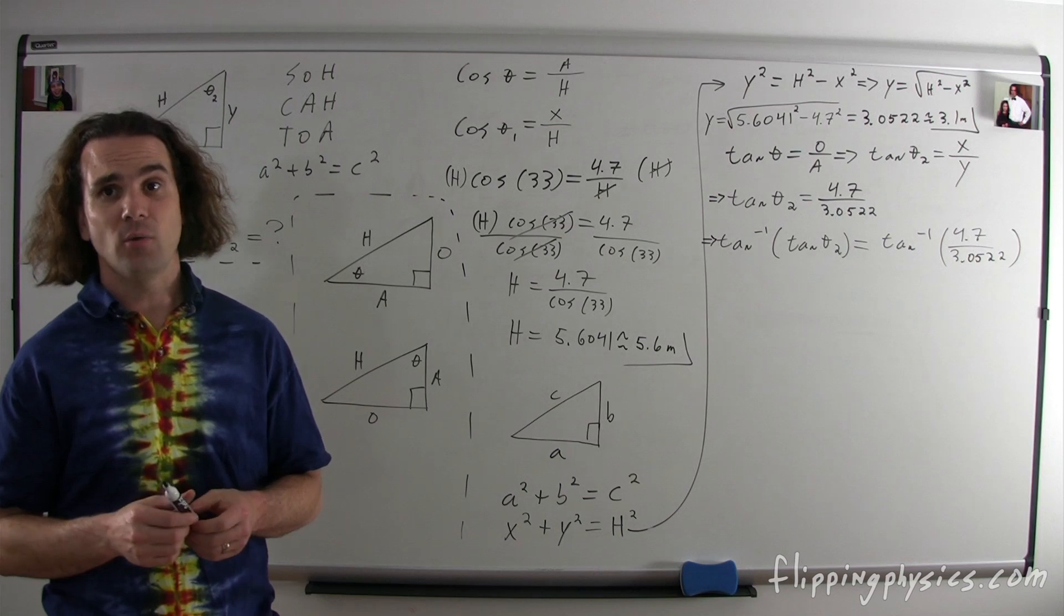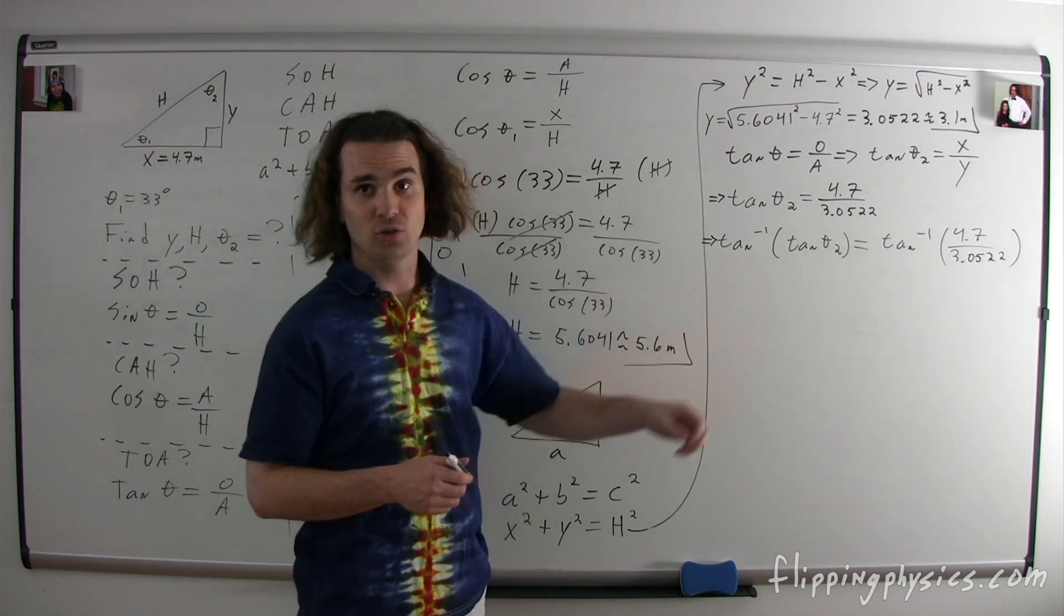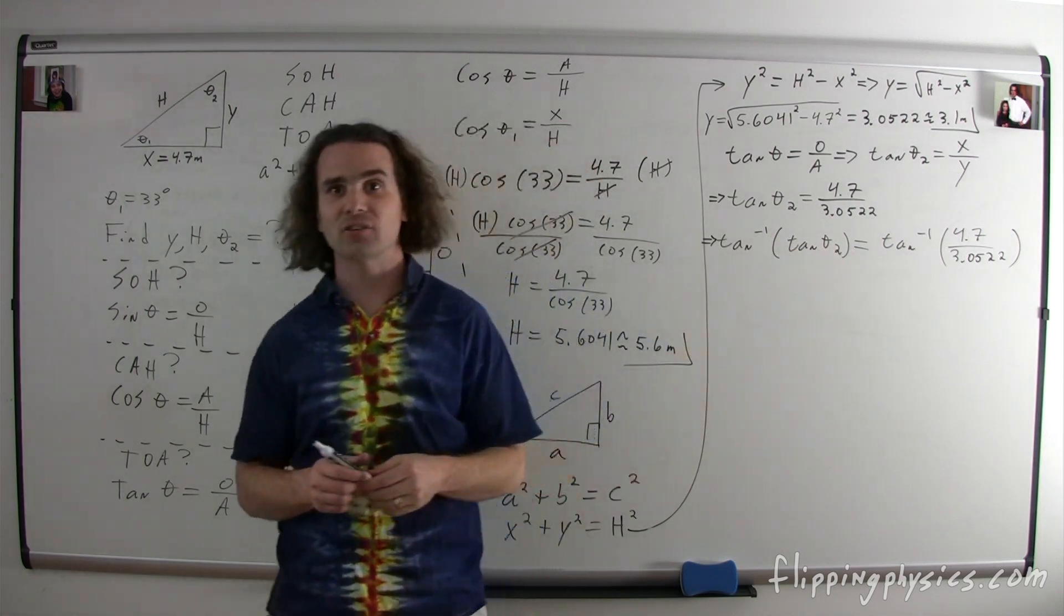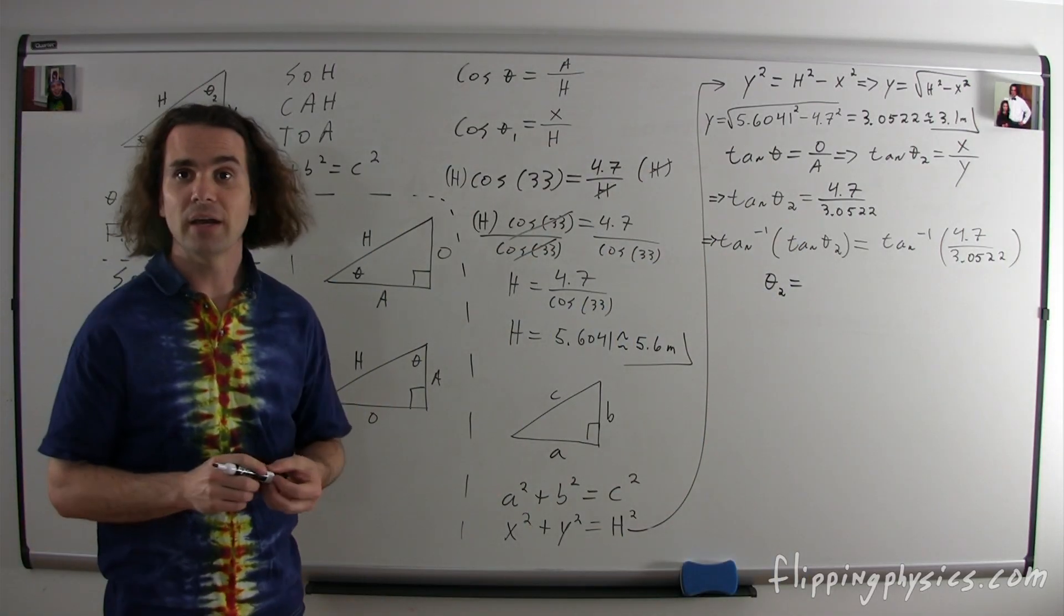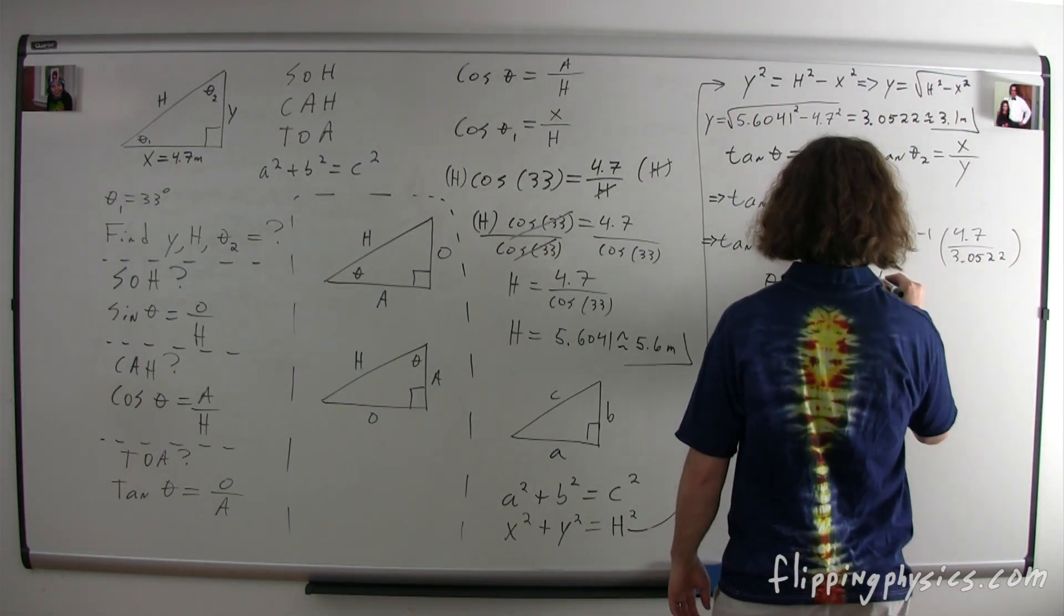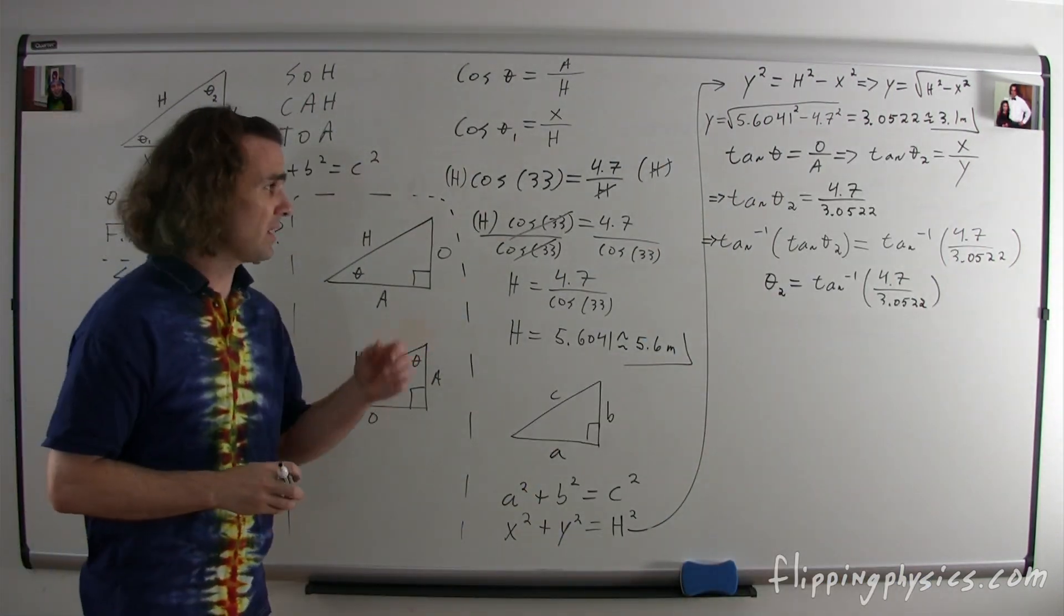On the left-hand side of the equation, you get the inverse tangent of tangent of theta 2. But what does the inverse tangent of the tangent of theta 2 actually work out to be? Oh, yeah. The inverse tangent of the tangent of theta 2 just works out to be theta 2. Right. Theta 2. And on the right-hand side, we get the inverse tangent of 4.7 over 3.0522. Bo, what then does the answer work out to be? Wow. It worked out to be exactly 57 degrees. So, with two significant digits, theta 2 equals 57 degrees.